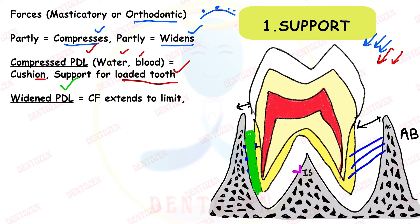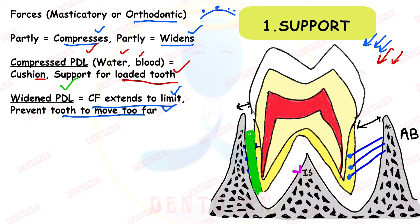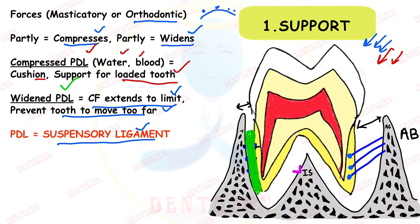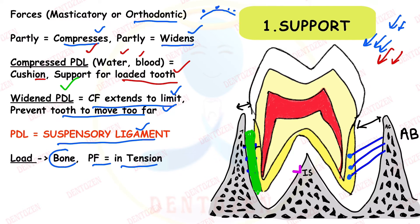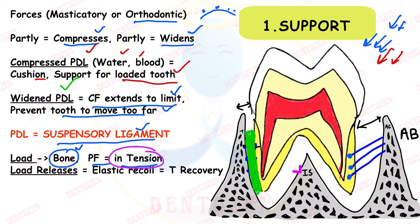In the widened part of the PDL, the collagen fibers extend to their limit — they cannot extend anymore. Their ends are embedded inside the cementum, so they prevent the tooth from moving too far. It is believed that the periodontal ligament acts as a suspensory ligament, suspending the tooth in position. When load is applied, fibers come under tension and transfer the force to the bone. When the load is removed, elastic recoil brings the tooth back to its resting position.